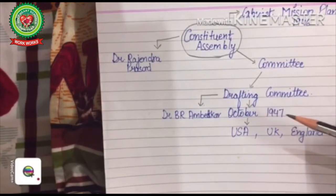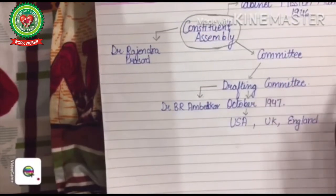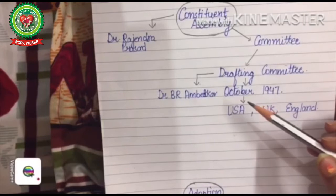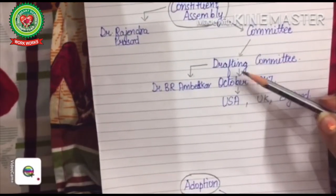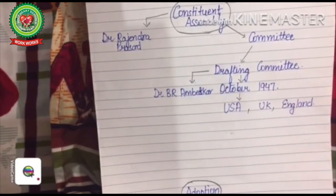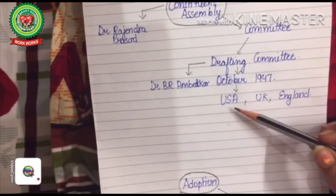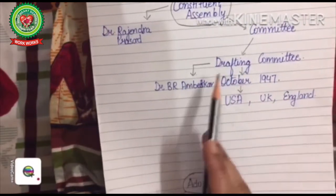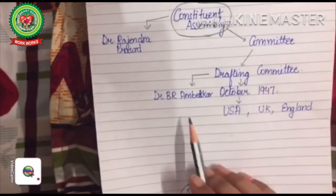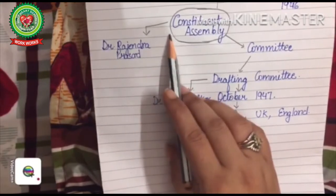A draft is a rough writing before it becomes a law. The work of the Drafting Committee was to scrutinize and examine the laws of India. The first draft was prepared by the Drafting Committee in October 1947. Key features of many countries' constitutions have been taken from USA, UK, and Australia. The chairman of the Drafting Committee was Dr. B.R. Ambedkar, and the President of the Constituent Assembly was Dr. Rajendra Prasad.